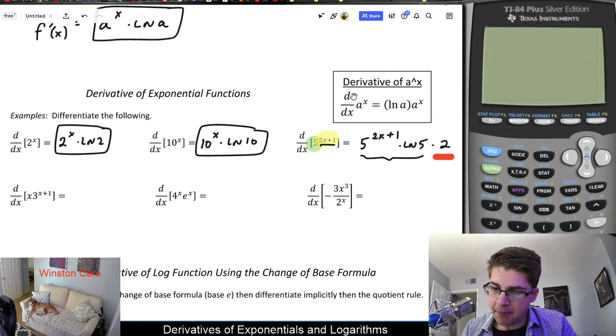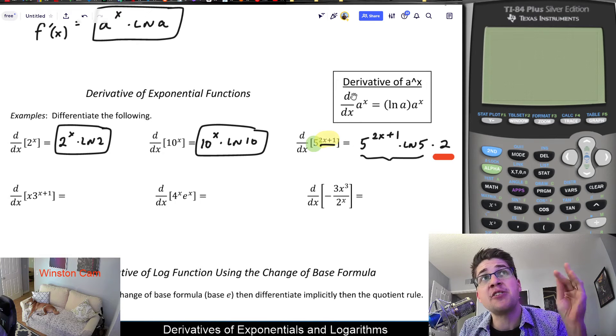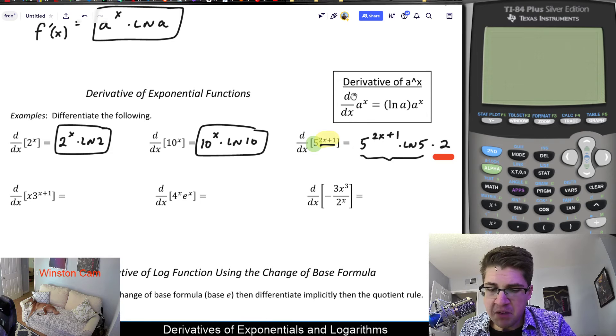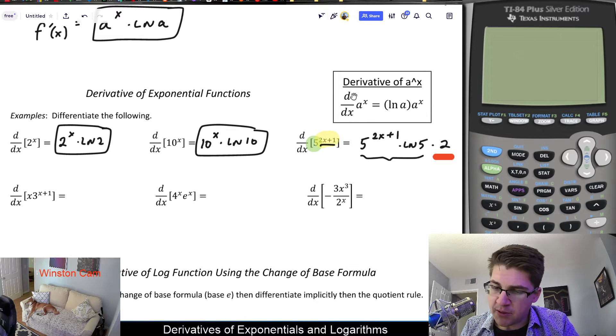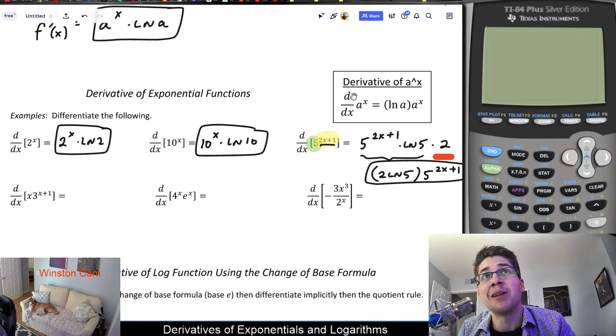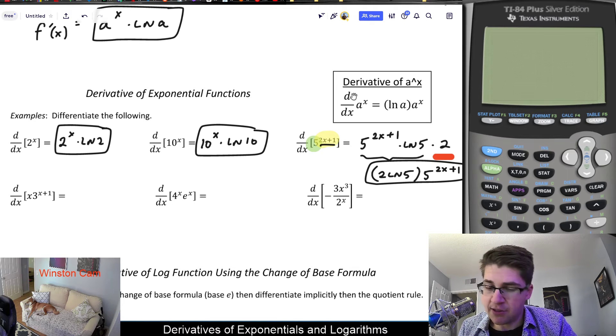And we could probably clean that up and so forth, but that's good enough. But at the end of the day, we have 5 to the 2x plus 1 multiplied by 2 times ln 5. And maybe it would make more sense to write 2 times ln 5 at the beginning and then multiply that by 5 to the 2x plus 1 or whatever. But at the end of the day, it gets kind of, there's a lot of little multipliers in there when solving such derivatives.